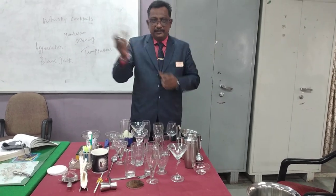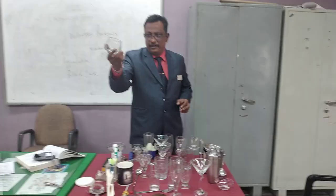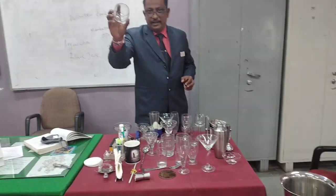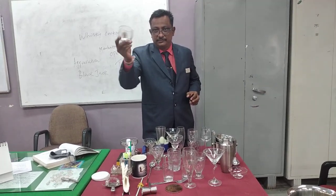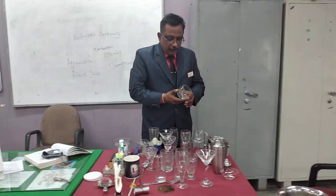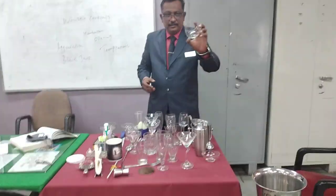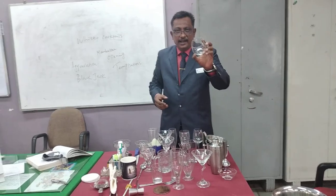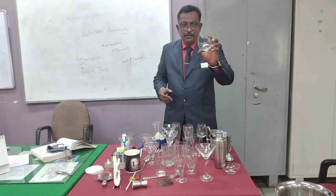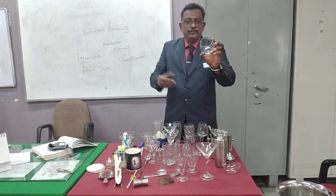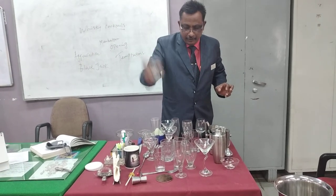This is called a roly poly glass — it has no stem. It is also used as a cocktail glass. In this, we can serve cocktails like Bloody Mary, which is a cocktail made of vodka and tomato juice.